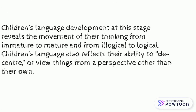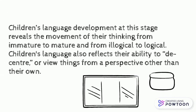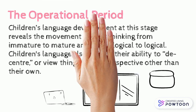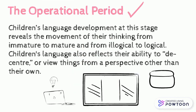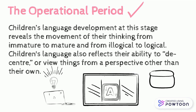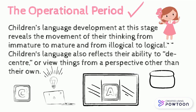Fifth, the operational period. Children's language development at this stage reveals the movement of their thinking from immature to mature and from illogical to logical. Children's language also reflects their ability to decenter, or view things from a perspective other than their own.